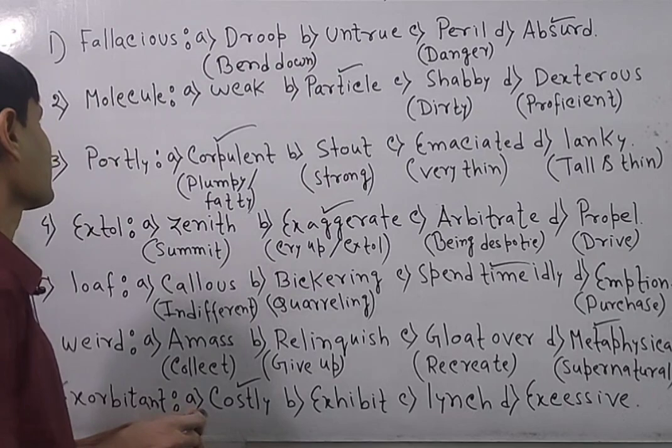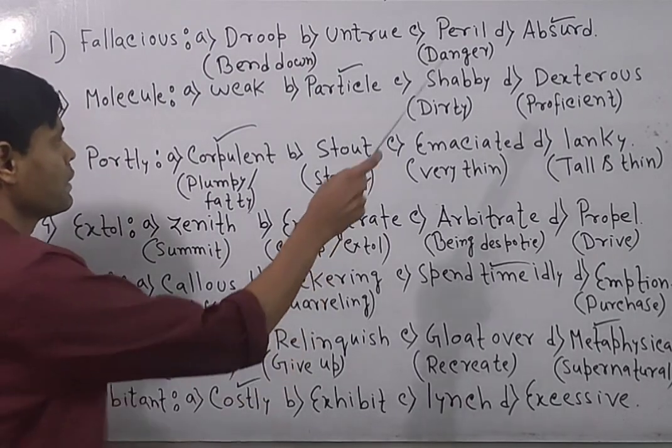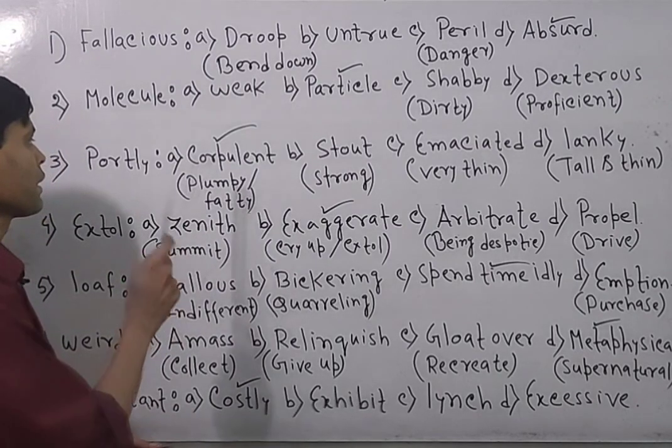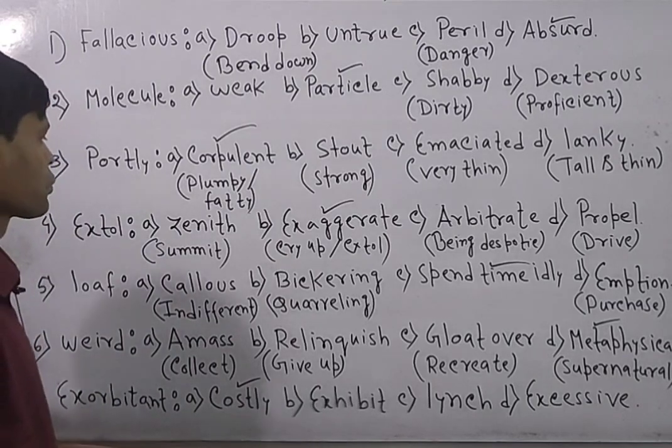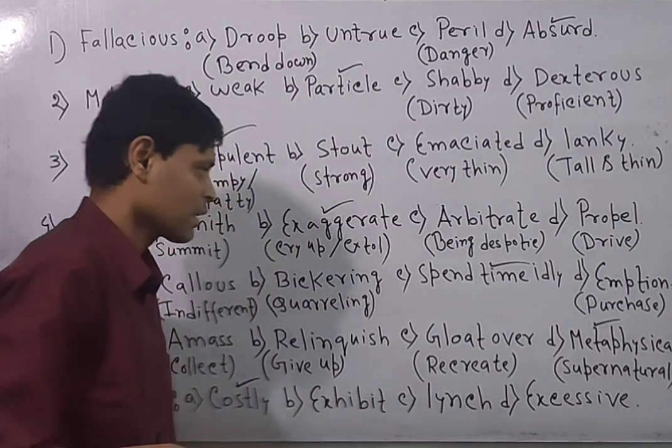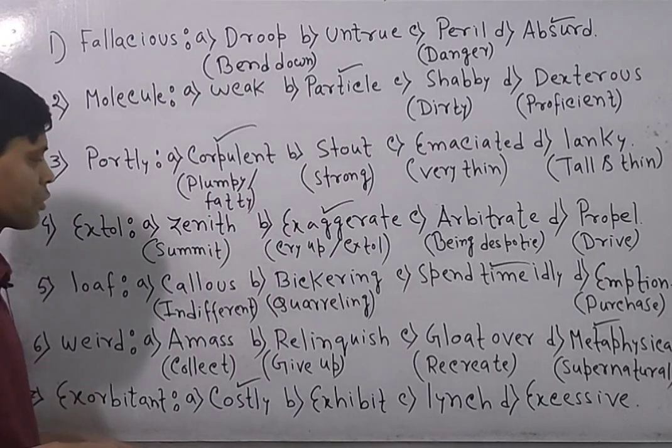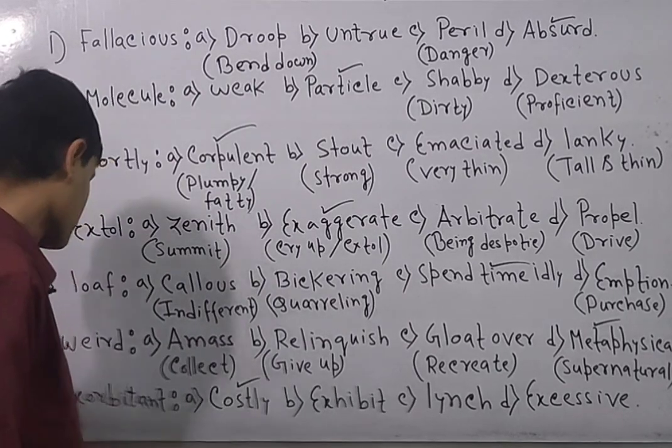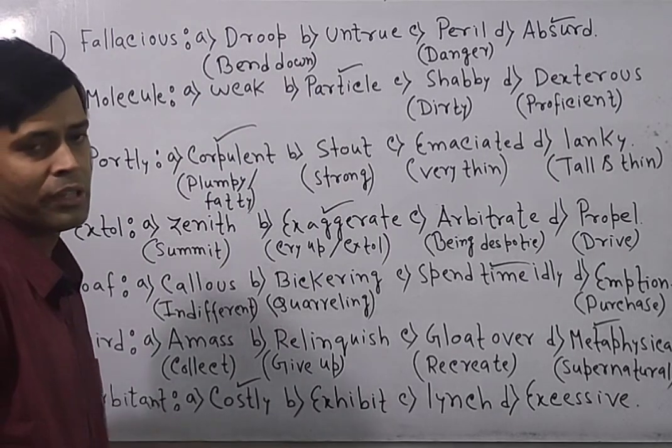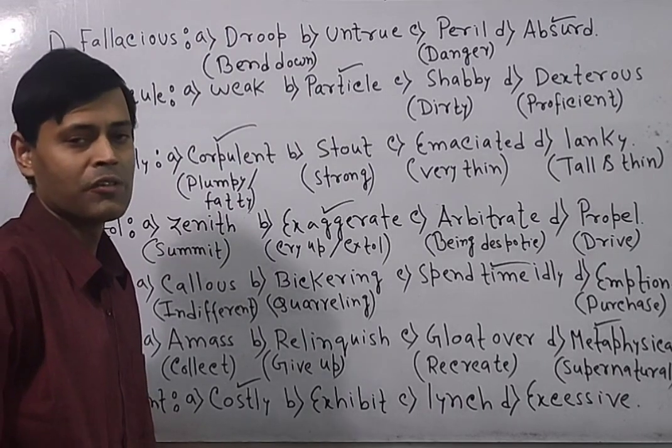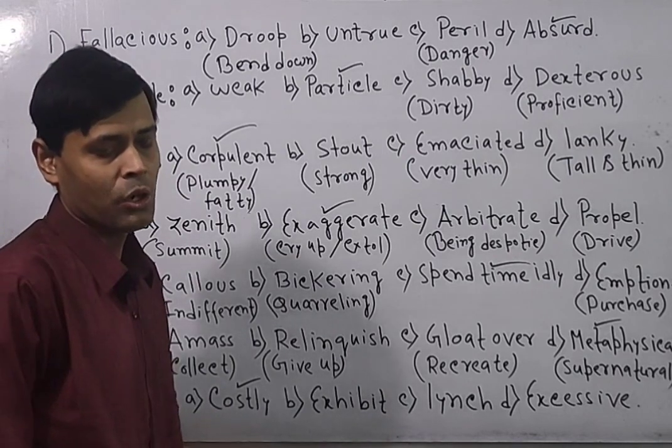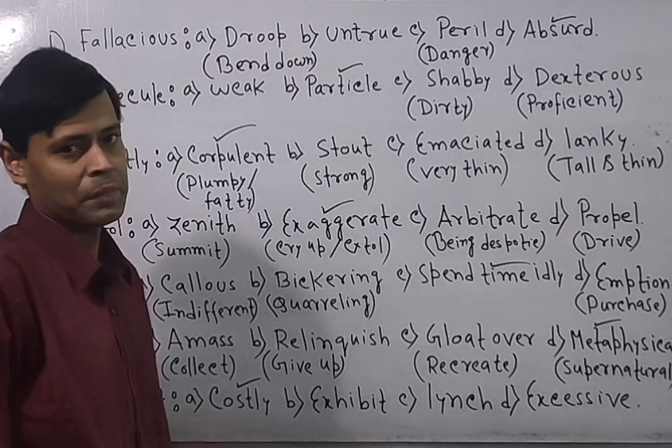Now look over the whole class. The first answer goes for option D, that is absurd. Second goes for option B, that is particle. Third goes for option A, that is corpulent. Fourth goes for option B, that is exaggerate. Fifth goes for option C, that is spend time idly. Sixth question goes for answer D, that is metaphysical. And the last question goes for answer A, that is costly or expensive. So this is my class for the day as far as synonyms are concerned. If you are unable to understand any part of this class, you can easily drop your comments in the comment box section. I will be gladly glad to satisfy your queries.